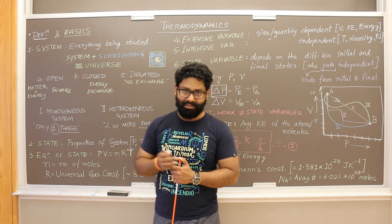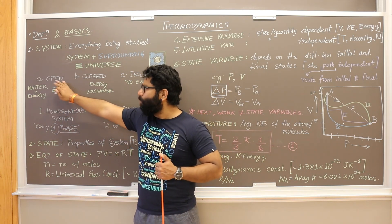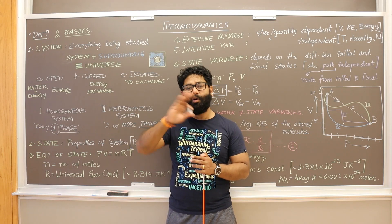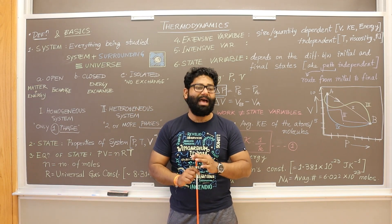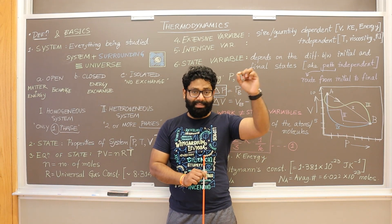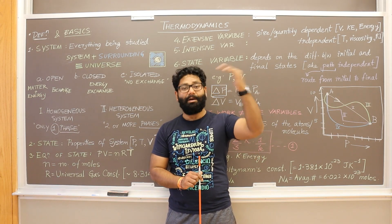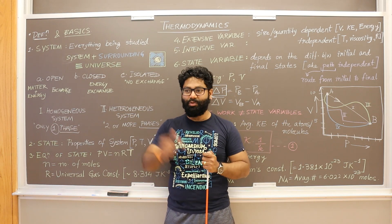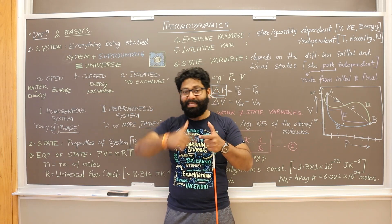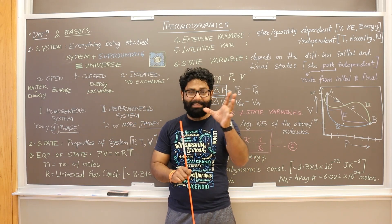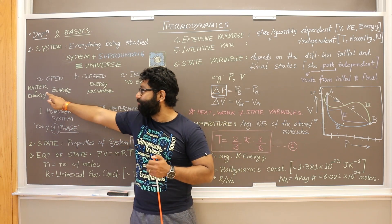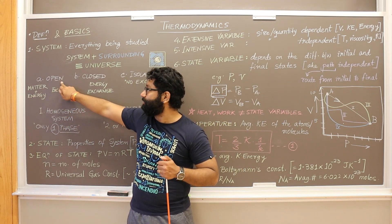Now, there can be different types of systems. An open system is one which allows both the transfer of matter and energy. For example, a coffee cup into which you can add milk and sugar, and which is also dissipating heat outside — that becomes an open system, allowing the exchange of both matter and energy.